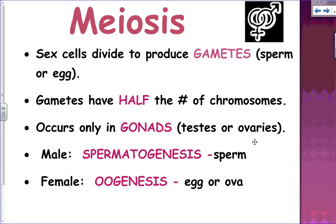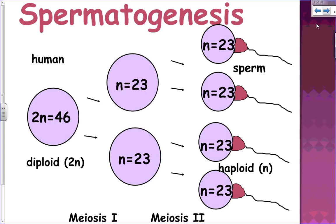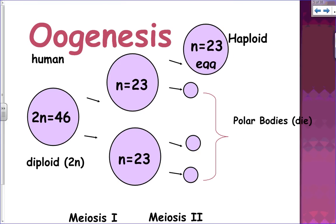With males there's a process called spermatogenesis — sperm formation. With females it's oogenesis — egg formation. The diploid number for a human is 46. After meiosis one, the number is now haploid — 23 chromosomes. Then a further division in meiosis two produces four haploid sperm cells.